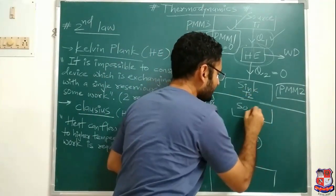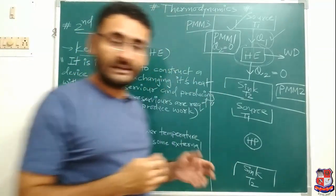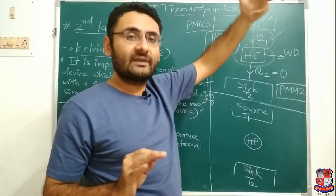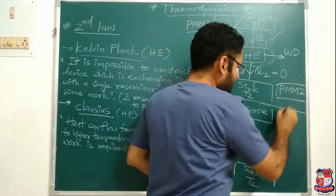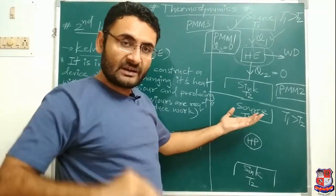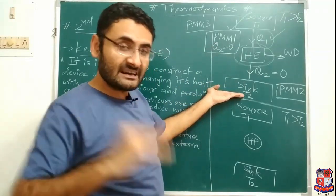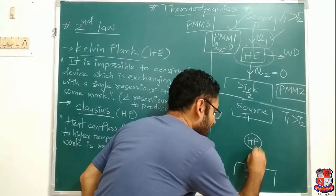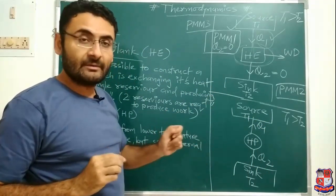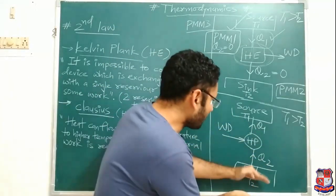The Clausius statement says: heat can flow from lower temperature to higher temperature. Generally T1 is greater than T2, and the law of thermodynamics says heat always flows from higher temperature to lower temperature — from T1 to T2. But the reverse is also possible: heat can flow from lower temperature T2 to higher temperature T1, but only if some external work is supplied to the heat pump. Without supplying any work — if work done is zero — heat will always flow from higher to lower temperature only.